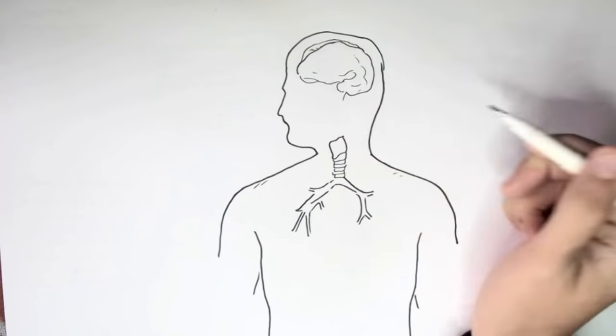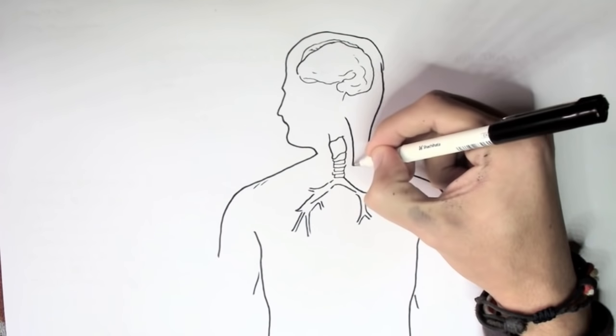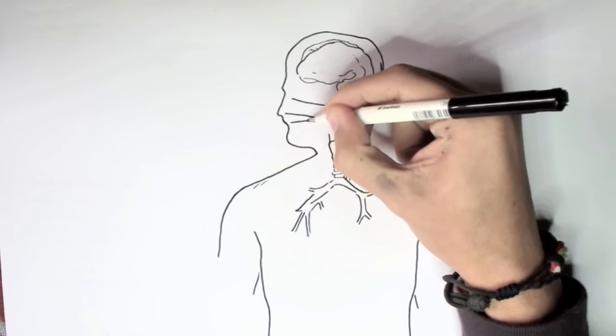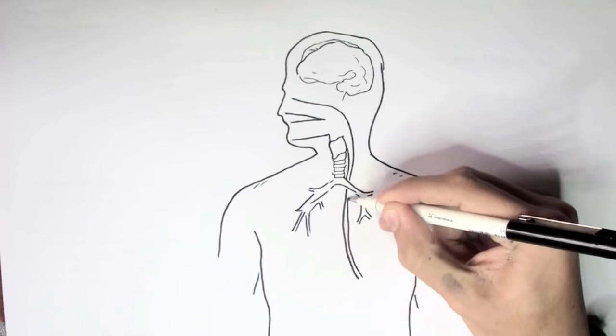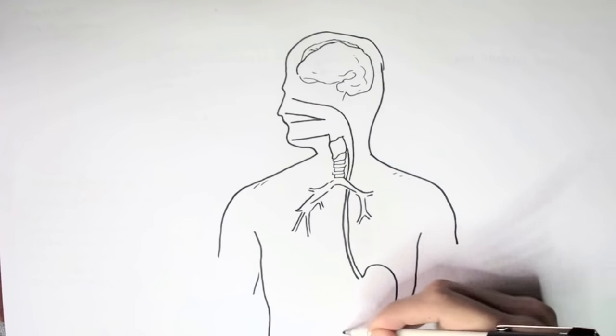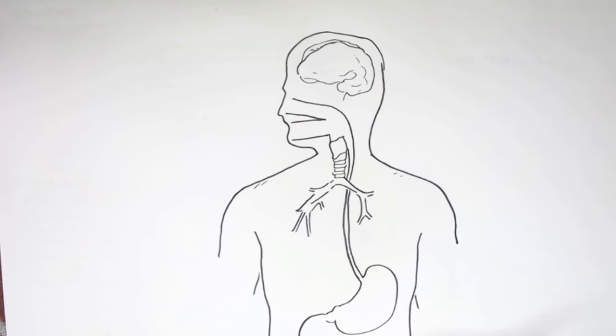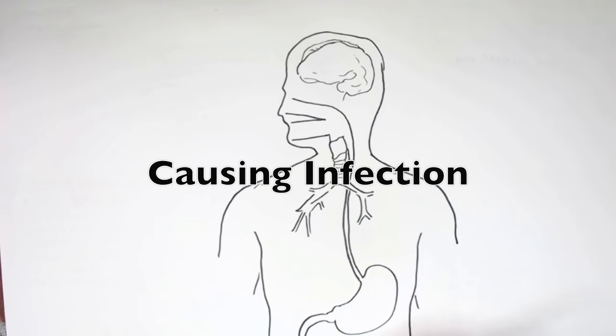So here I am drawing a human, and here is the GI tract. I am drawing the gastrointestinal tract because Entamoeba histolytica enters the body predominantly through the mouth and then goes through the digestive tract, causing its stuff.